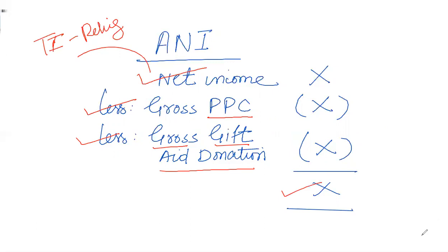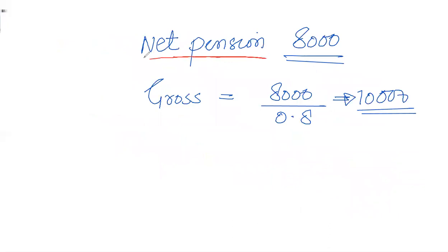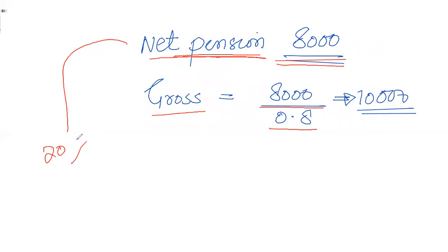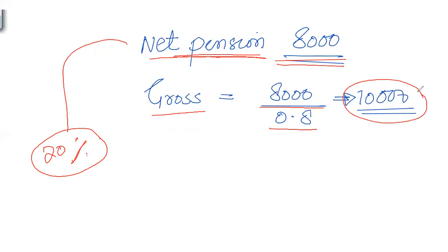Regarding the meaning of 'gross': if a net pension or net gift aid donation is given, always gross it up by dividing by 0.8, because the difference between gross and net is 20% (the basic rate). So, for example, a gross pension contribution of £10,000 corresponds to a net pension contribution of £8,000. The detailed rules of pension contribution will be covered in the pension chapter. Convert net pension to gross pension — and likewise for gift aid donations — before adjusting in the ANI formula.